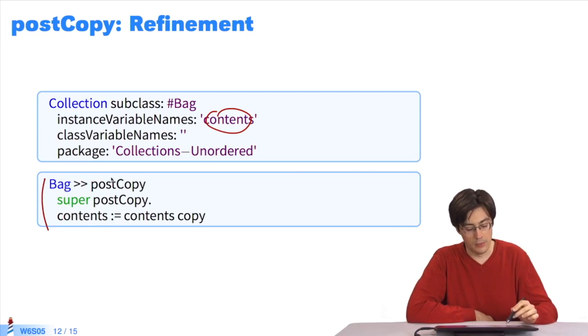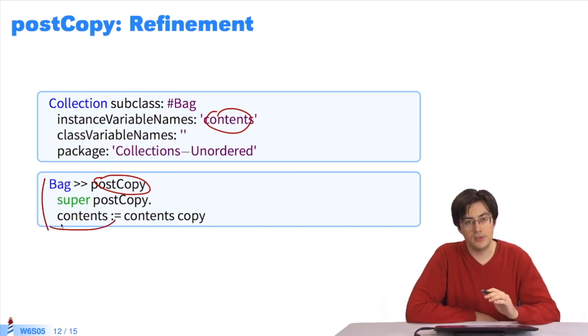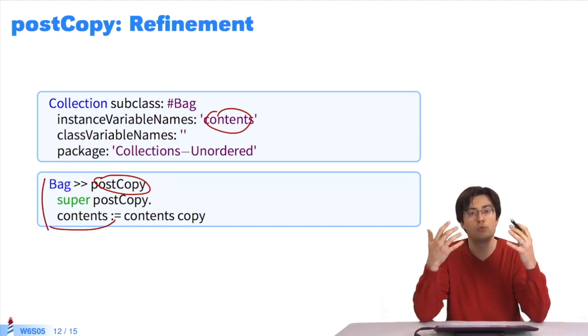Here the idea is, postCopy is a message sent to copy, or the new object, which shares all of the instance variables. If we don't want to share them, we create new ones and decide upon their value. Here in my contents variable, I'll put a copy of the initial contents. That way, I don't share them. Each copy of my bag has its own contents.